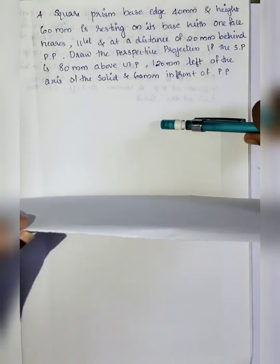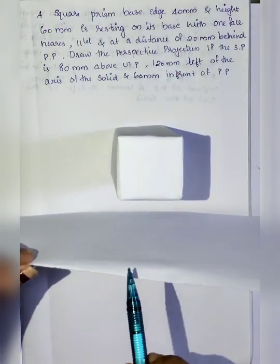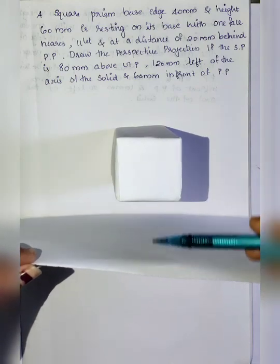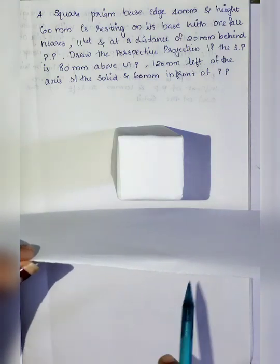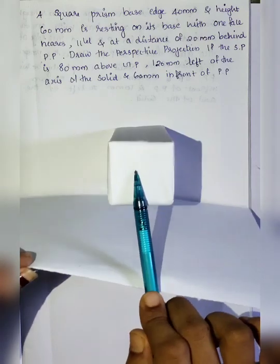This is the picture plane and this is the vertical picture plane. The solid square prism is resting on its base with one face nearer, parallel, and at a distance of 20mm behind the picture plane. The top view shows the base and the front view shows the face. The face has height dimensions of 40 by 60. The top view is the base and the front view is the projected face.